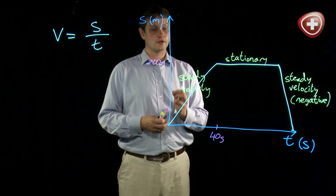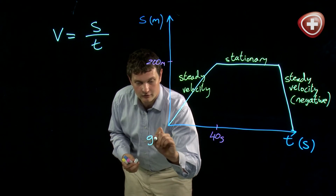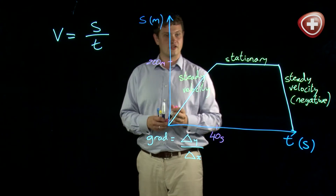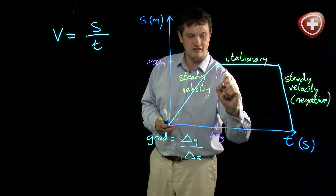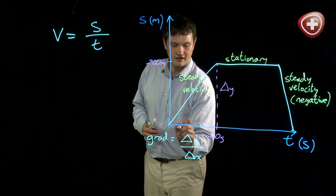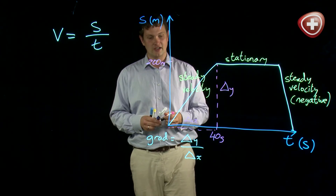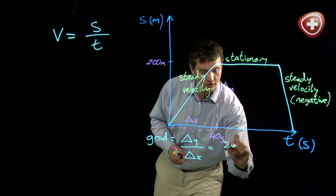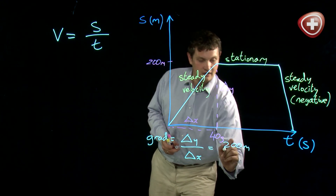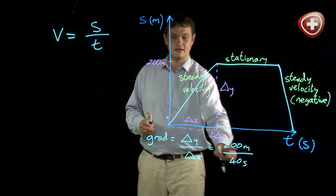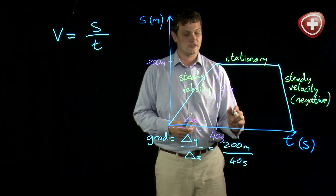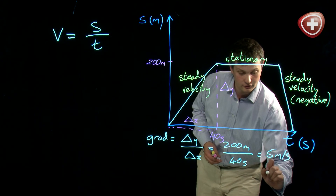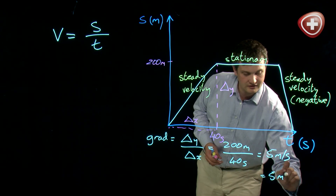We do that by calculating the gradient. The gradient is equal to the change in our y-axis divided by the change in our x-axis. So if we drop this down here, this is going to be our change in y, and this across here is going to be our change in x. Taking some readings: our change in y is 200 meters (we've gone from 0 to 200), and our change in x is 40 seconds. So we can work this out to say that I must have been going at 5 meters per second, which can also be written as 5 meters seconds to the minus 1.